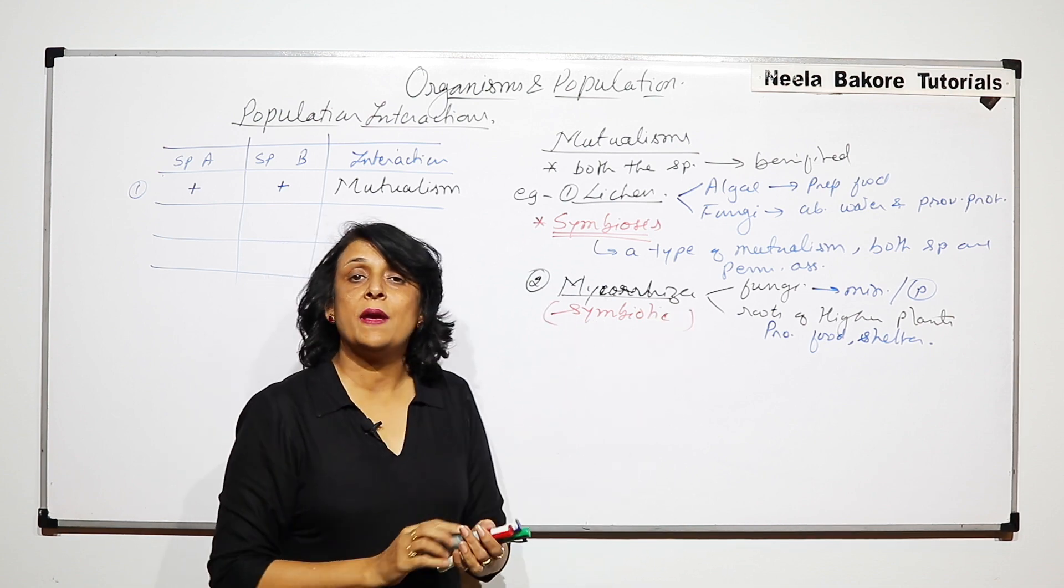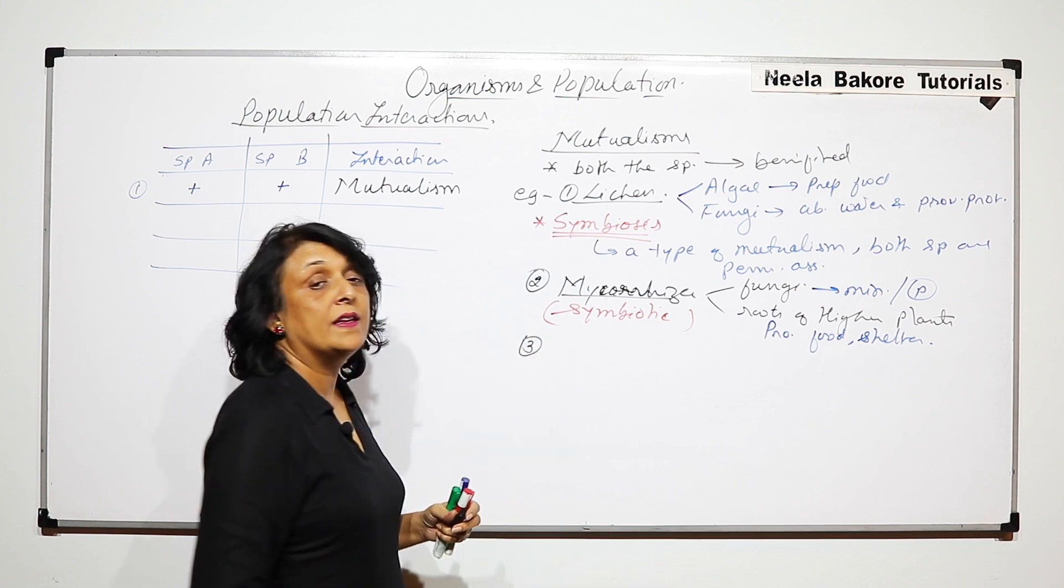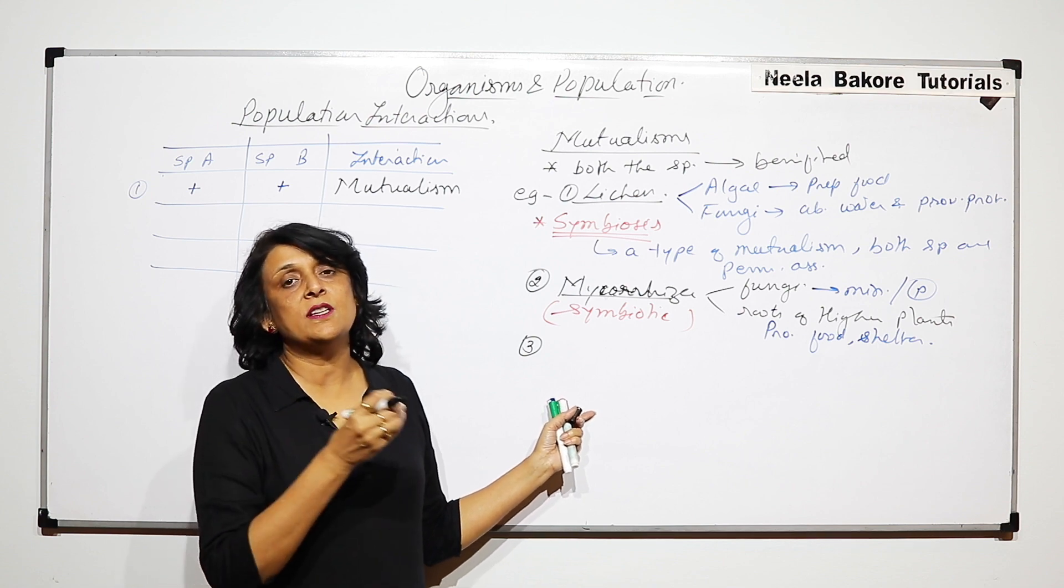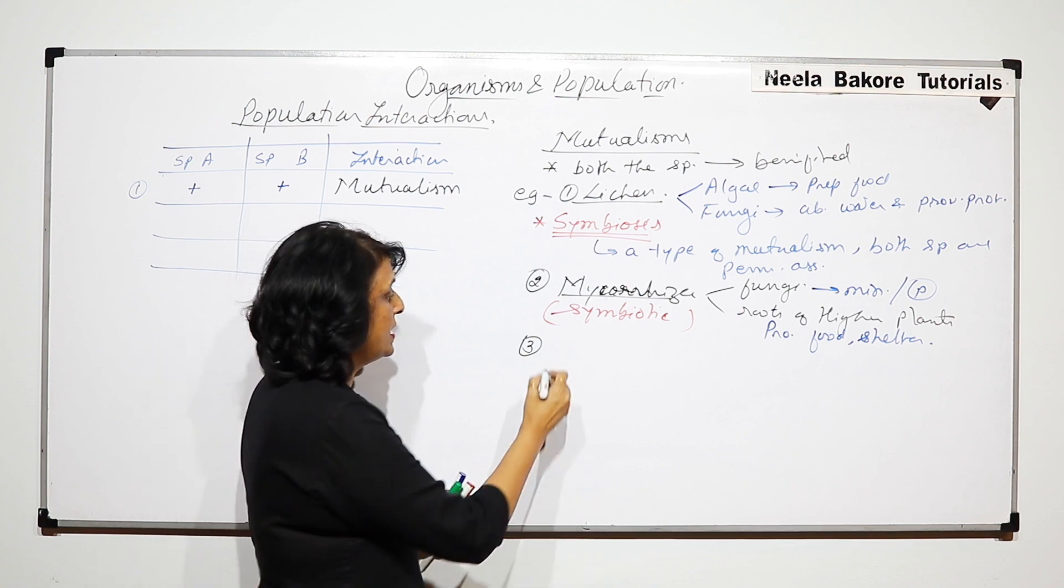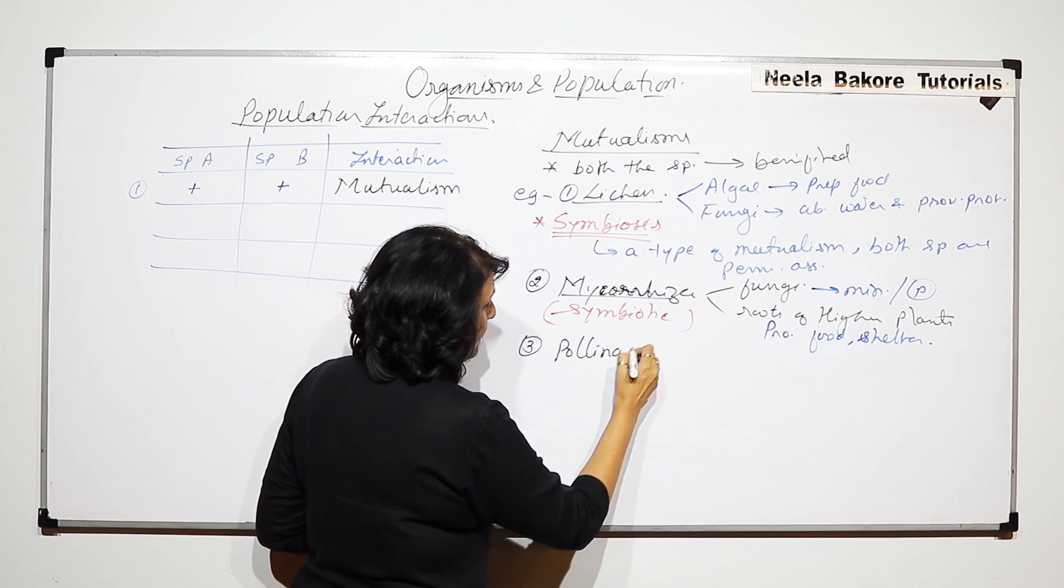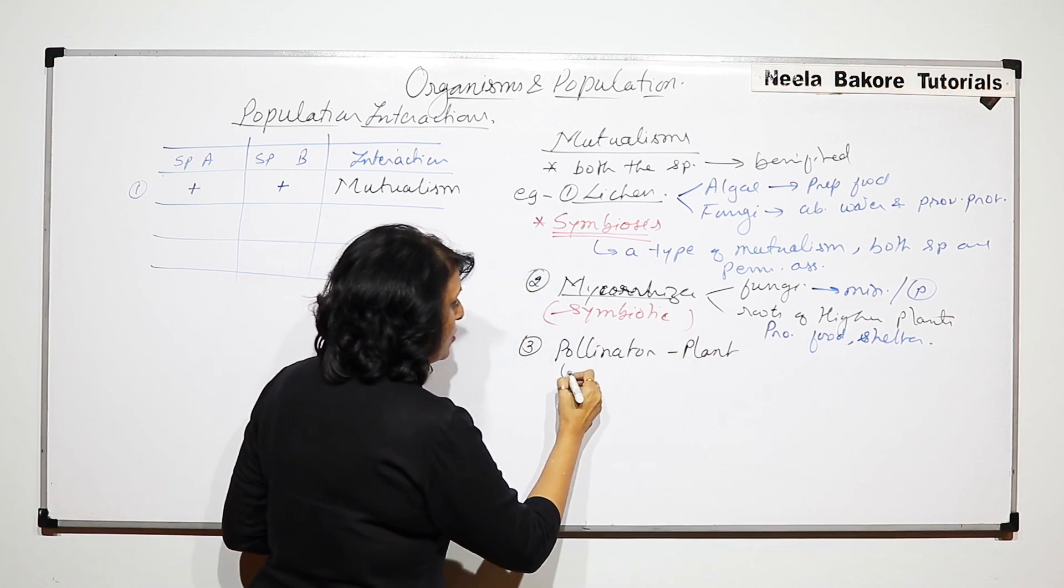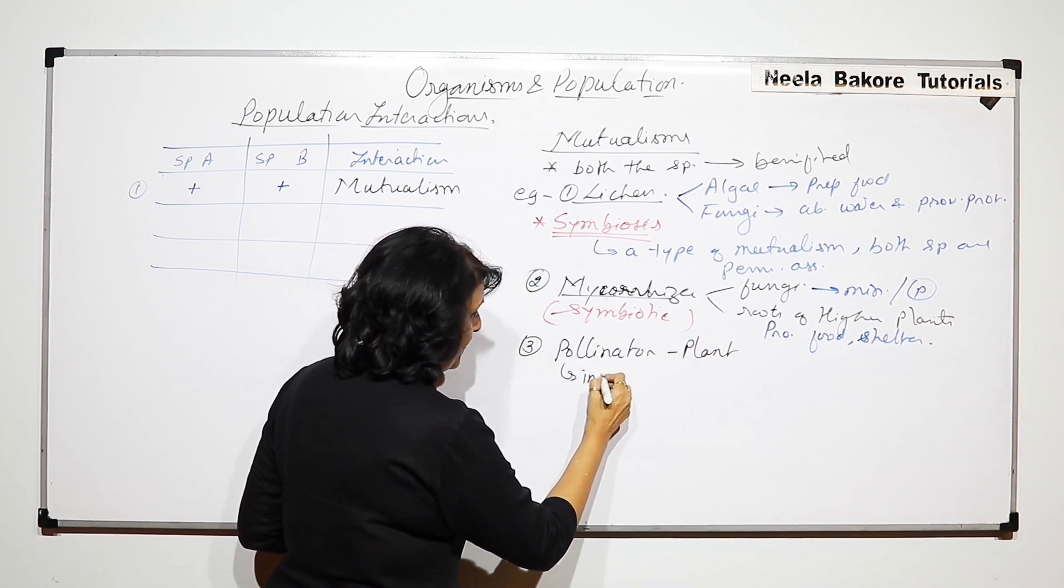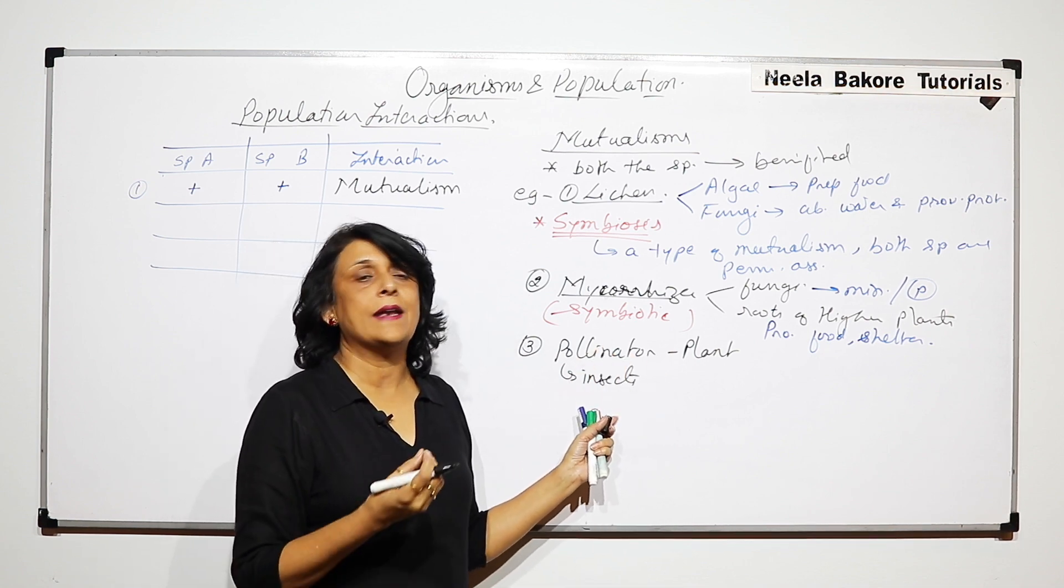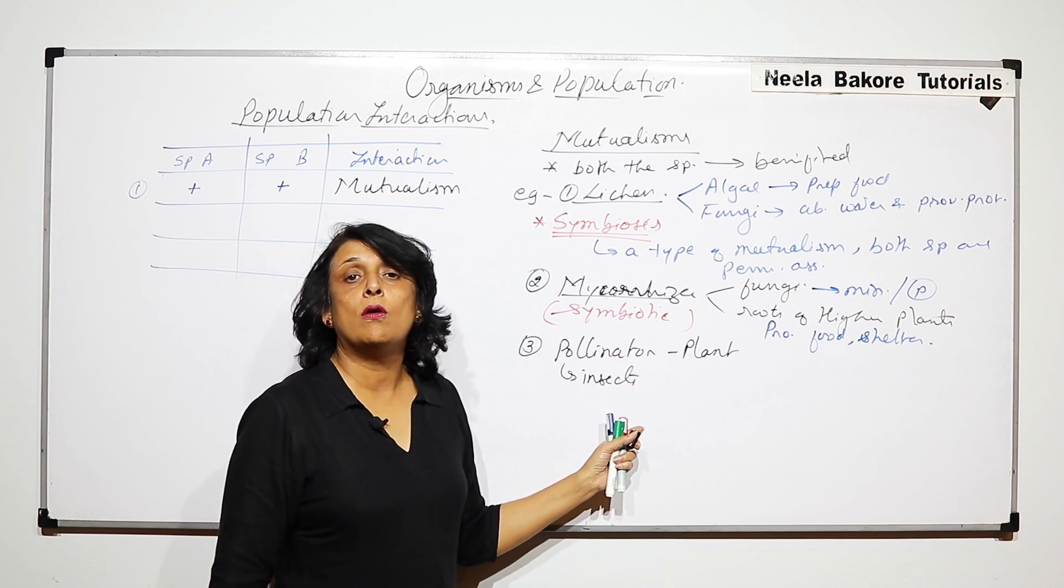The third one where the association may not be permanent. It can be just a temporary association between the species. And that is of the pollinator and plant. Now, pollinators are normally insects. Most of the pollinators are insects, but there are other pollinators also like animals. And the plant, these are the two species.